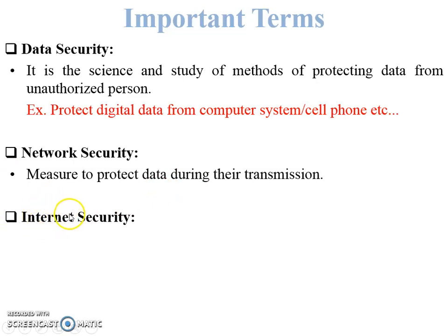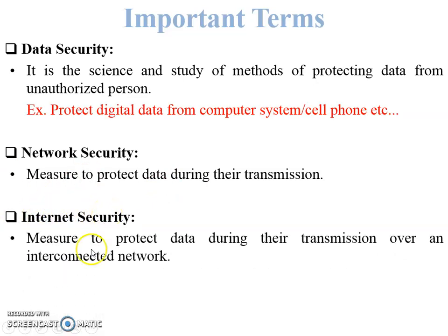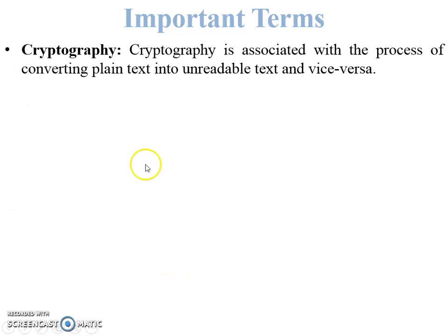The third term is internet security. We all know that the internet is a collection of different networks. Internet security refers to measures to protect data during transmission across an interconnected network.